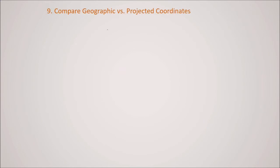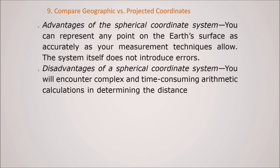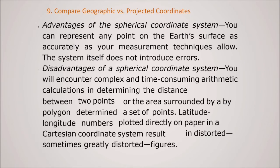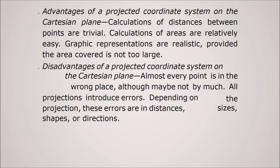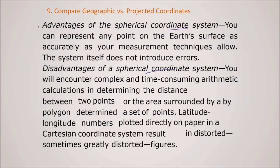Compare geographic and projected coordinates, that means in terms of advantages and disadvantages. First is the advantages of a spherical coordinate system and we will see the disadvantage of this spherical coordinate system. And we will see the advantage of projected coordinate system and then we will see the disadvantage of projected coordinate system. So advantage of a projected, spherical coordinate system, that is geographical coordinate system, you can represent any point on the Earth's surface as accurately as your measurement technique allows. So this system itself does not introduce errors.